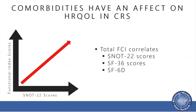Their final conclusions showed correlations between quality of life metrics — specifically SNOT-22 scores, which is a CRS-specific quality of life measure — and the Functional Comorbidity Index. Every increase in SNOT-22 score was also demonstrated to increase in the functional comorbidities index, or vice versa. The total FCI appeared to correlate with both SNOT-22, SF-36, and SF-6D.